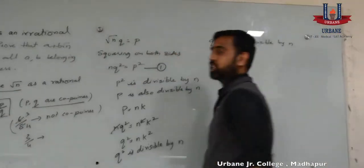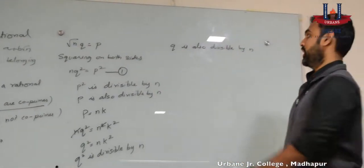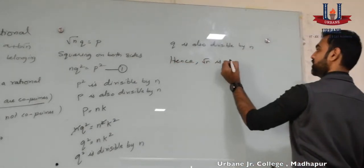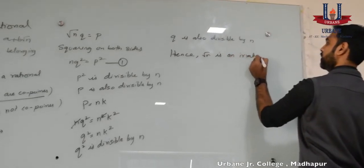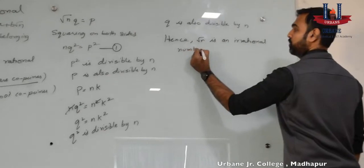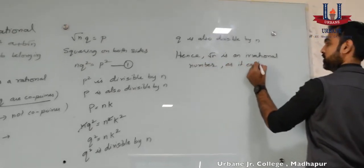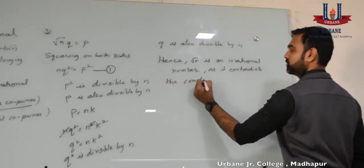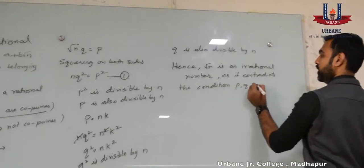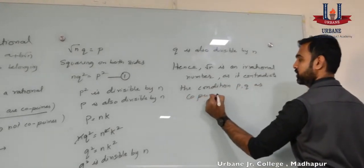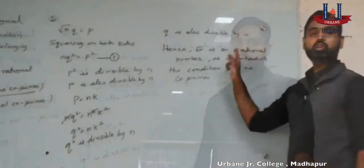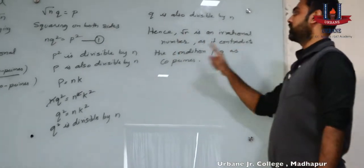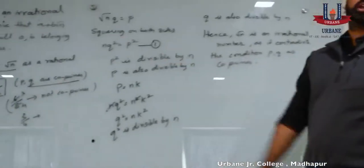So, it contradicts our assumption that square root of n is a rational number. Hence, square root of n is an irrational number, of course, when n is not a perfect square, as it contradicts the condition that p and q are co-primes.